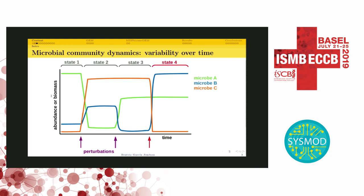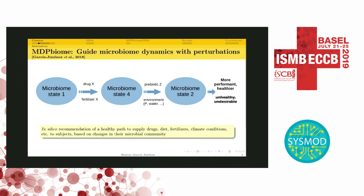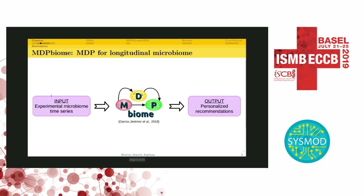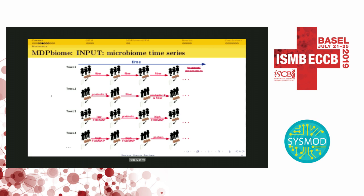Taking this scenario in mind, we developed NDP Biome, a computational system that was presented last year at ECCB, to move the microbial community state between different ones using external perturbation — that could be changes in diet or fertilizers in plants, or whatever perturbation — to reach a more performant or healthier state. This is a high-level scheme of NDP Biome with the input of experimental microbiome time series and the output of personalized recommendations.